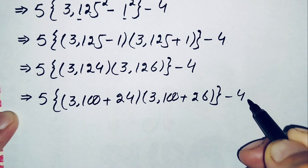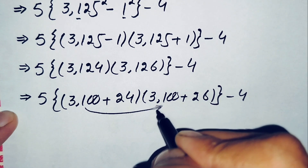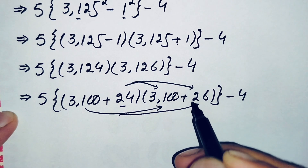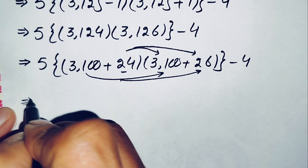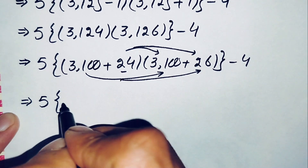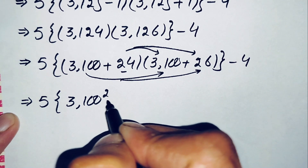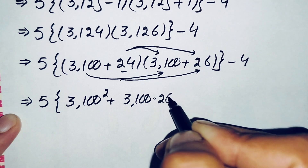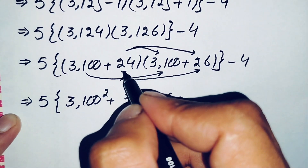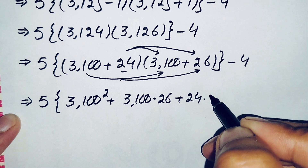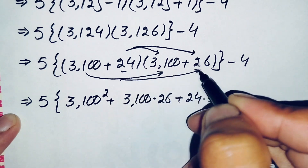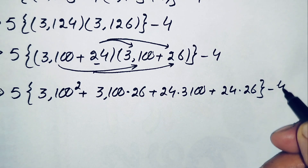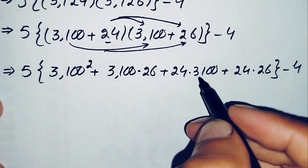Now here we will multiply 3100 plus 24 by 3100 plus 26. This becomes: 5 times 3100 squared, plus 3100 times 26, plus 24 times 3100, plus 24 times 26, all in brackets, minus 4.